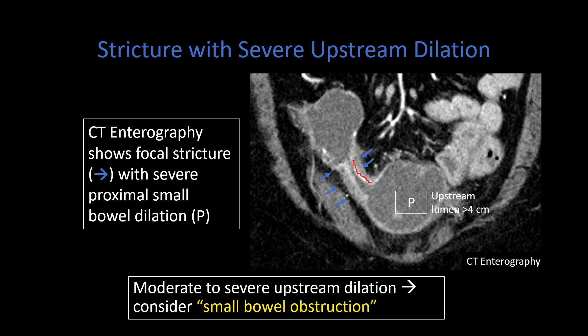With active inflammation, a small bowel obstruction will often initially be managed medically, because relieving some of that active inflammation may open up the lumen and reduce obstructive symptoms. But in some cases, medical management is not enough and they may need to proceed to surgical resection.